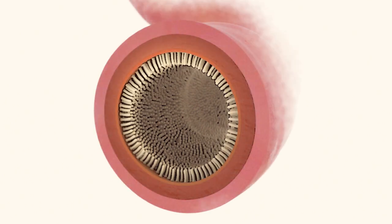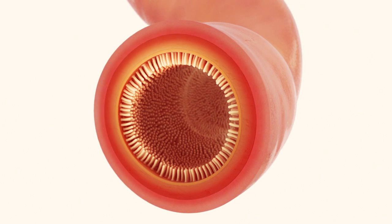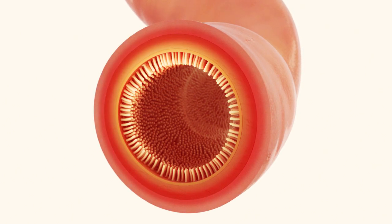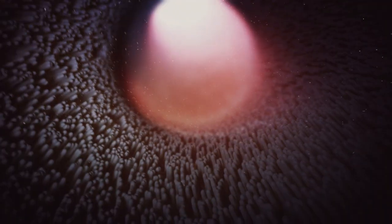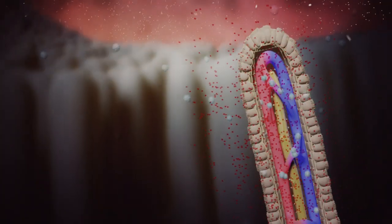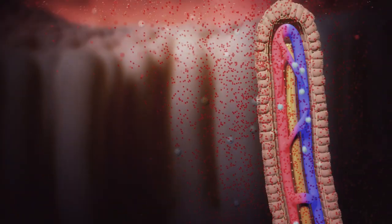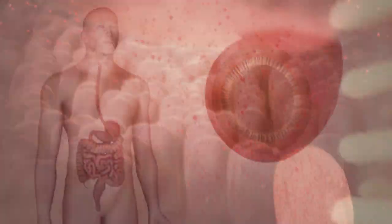In people with Crohn's disease, something causes your immune system to launch an attack within the GI tract that won't shut off, and because the attack goes on, it causes the walls of the GI tract to become inflamed and the symptoms of Crohn's to appear.